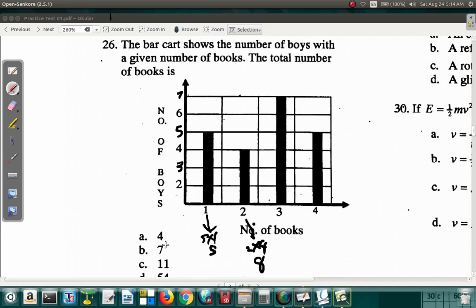So we have more than 4, more than 7. So A and B are out. And C says 11. We have exactly 11 so far and we need to go more. So it's more than 11. The answer would have to be 54, D.